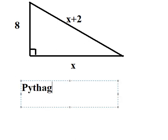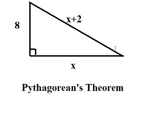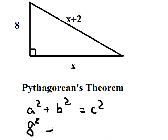I will write a² + b² = c². So a is 8, b is x, and c is x + 2.